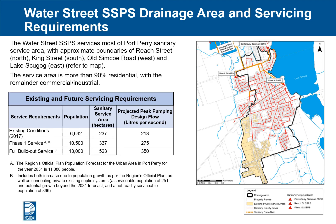The increase in pumping station capacity will happen in two stages. In the first stage, capacity will be provided for a population of 10,500, and in the future, pumping capacity will be expanded for a build-out population of 13,000. This phase one estimate is based on population growth in the region's official plan and includes existing populations now serviced by private septic systems that could be connected to the sanitary sewer collection system. The full build-out capacity services 523 hectares of sanitary service area with a 350 litre per second peak design flow.